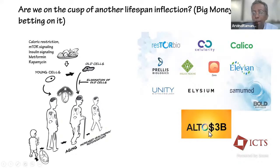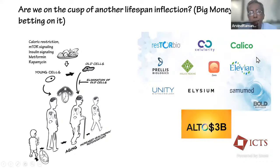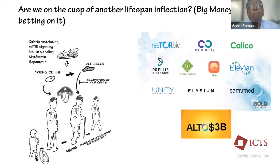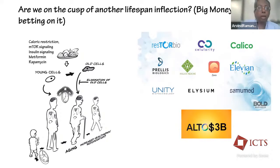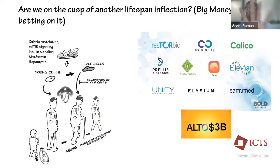People have bought into this enough that companies are pouring in huge money: Jeff Bezos started a company for $3 billion, there's Unity Biotech, Calico from Google, and numerous others looking at these strategies. The notion is that if we understand the fundamental pathways that drive aging — mTOR, nutrient sensing signals, senescent cells — we might actually be able to slow down the clock, or at least enable healthy aging. The big money is betting on many of these concepts.